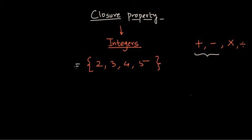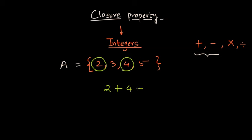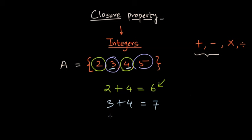So let's say this is the only set we have for now — set A, which has four numbers. What if we select any two numbers and perform these two operations? Let's choose two and four: two plus four equals six. Then choose three and four: three plus four is seven. Now let's try subtraction with three and five, so five minus three.